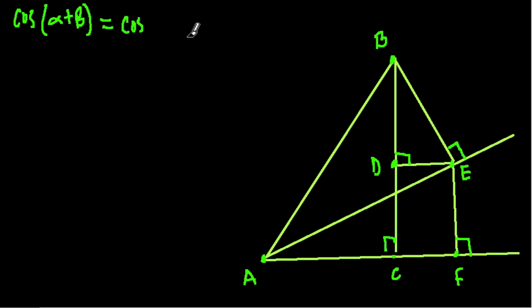We're going to look at the proof of cosine of alpha plus beta and how it breaks down to the cosine of alpha times the cosine of beta minus the sine of alpha times the sine of beta.